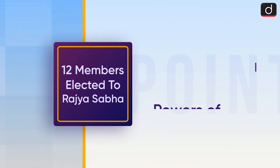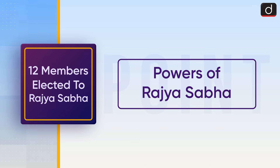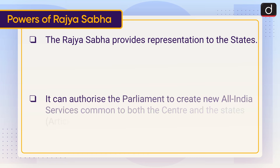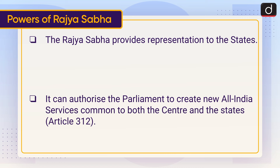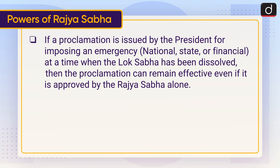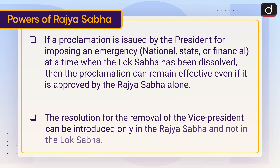Moving on to the powers of Rajya Sabha: the Rajya Sabha provides representation to the states. It can authorize the Parliament to create new All India Services common to both the center and the states under Article 312. If a proclamation is issued by the President for imposing an emergency — national, state, or financial — at a time when the Lok Sabha has been dissolved, then the proclamation can remain effective even if it is approved by the Rajya Sabha alone. The resolution for the removal of the Vice President can be introduced only in the Rajya Sabha and not in the Lok Sabha.